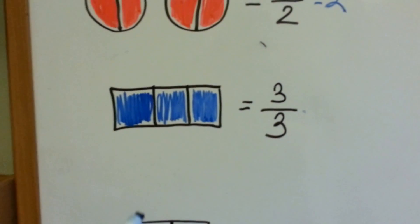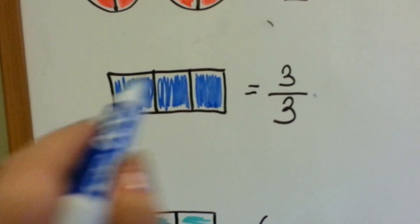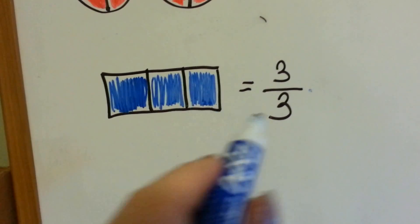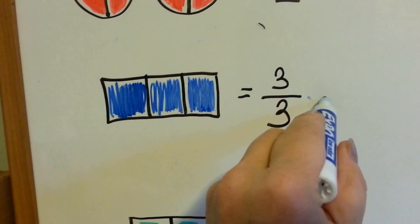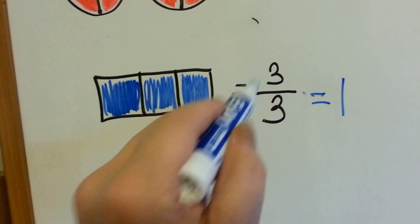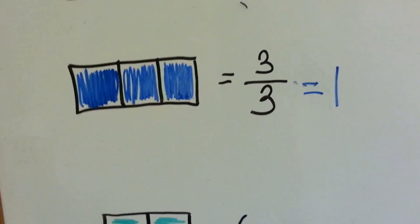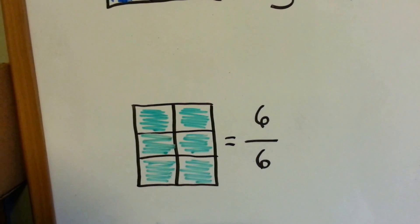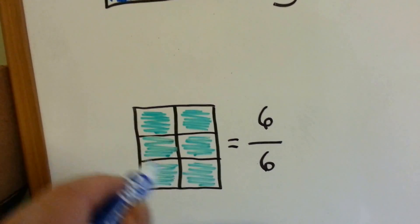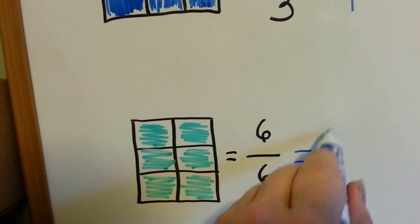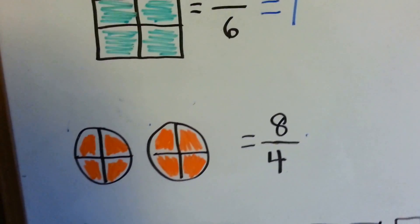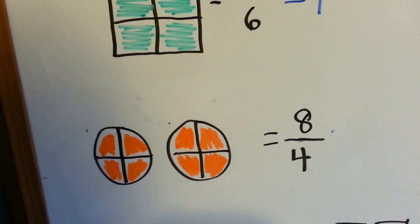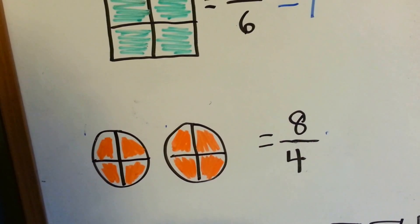Try this one. This is split into three parts, and all three parts are highlighted. If you've got three parts of three, you've got one whole. Three divided by three is one. What's six divided by six? One whole. What is eight divided by four? Two whole.